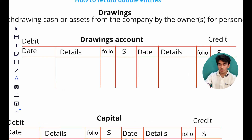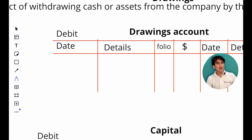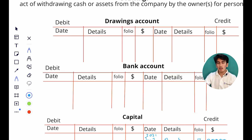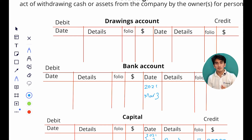Let's record an entry. The drawings account - what is it doing? It is receiving, because the owner took away one hundred dollars, meaning the owner is receiving one hundred dollars, and so is the drawings account. Which is the other account that is losing the one hundred dollars? The bank account, because owner Alex decided to take one hundred dollars from the bank. So our bank account on March the 3rd gives away one hundred dollars to the drawings account - we credit it with one hundred dollars, and in details we write the drawings account.